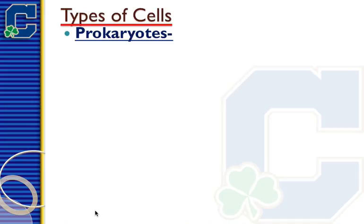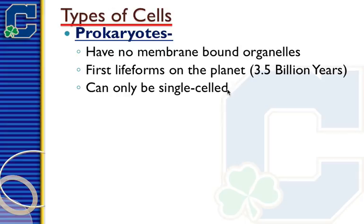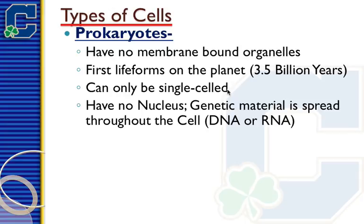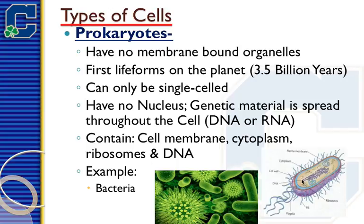The first group is actually the first living life form on the planet — those are prokaryotes. They showed up about 3.5 billion years ago. They were basically just simple little bubbles — they had no membrane-bound organelles, no specialized parts inside of them, and can only be single-celled. They're still here on the planet today. They have no nucleus; their DNA or RNA is spread throughout their entire body. They contain only four things: a cell membrane, a cytoplasm, ribosomes, and DNA. An example would be bacteria, which look almost exactly the same now as they did 3.5 billion years ago. Bacteria are the oldest living things on the planet.